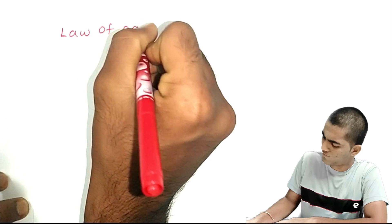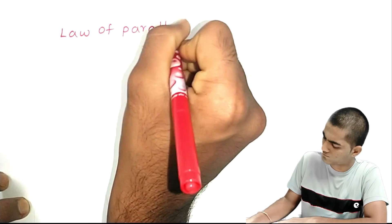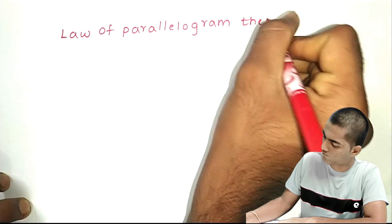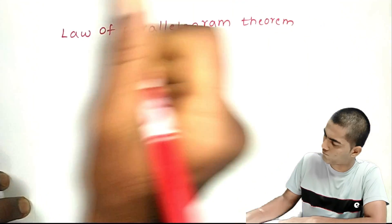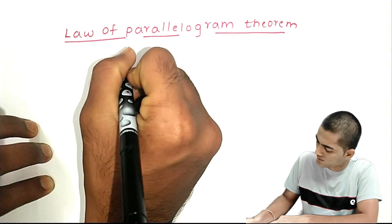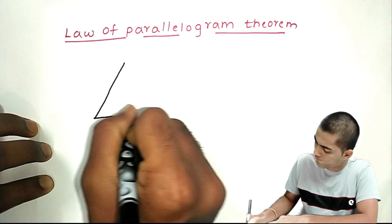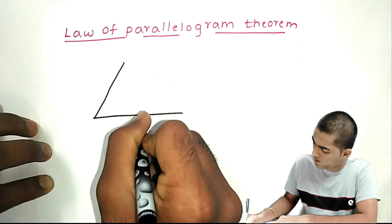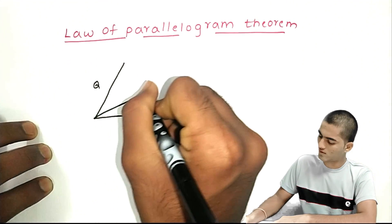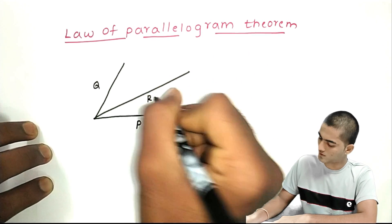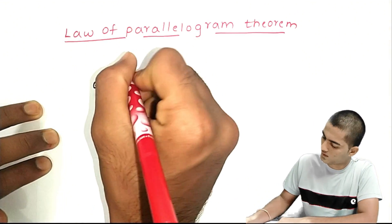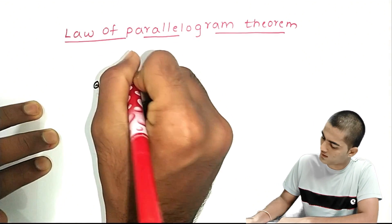Law of Parallelogram Theorem. Take two component forces, P and Q. And the resultant is R. For example, this is a Parallelogram.